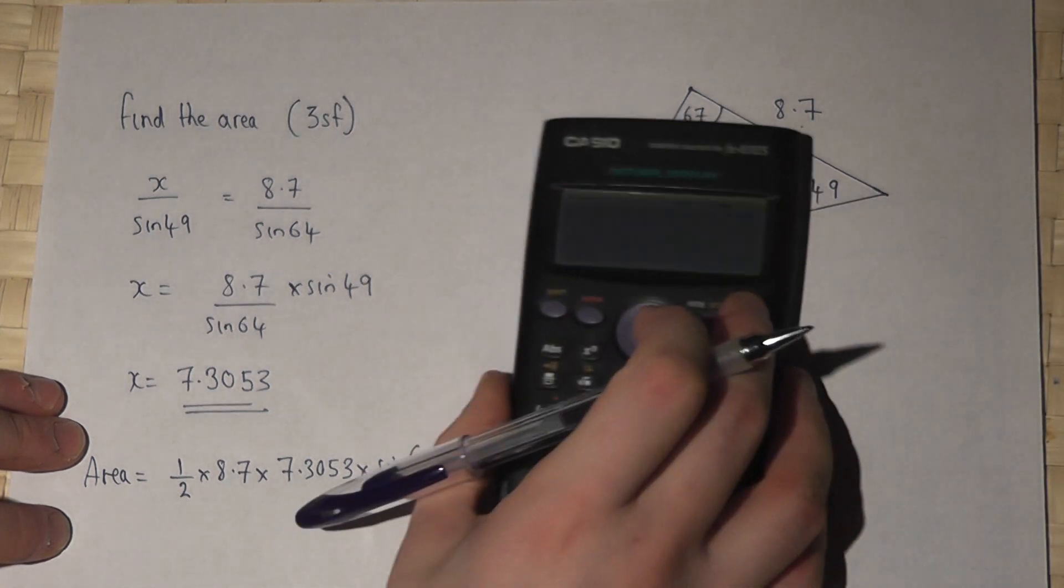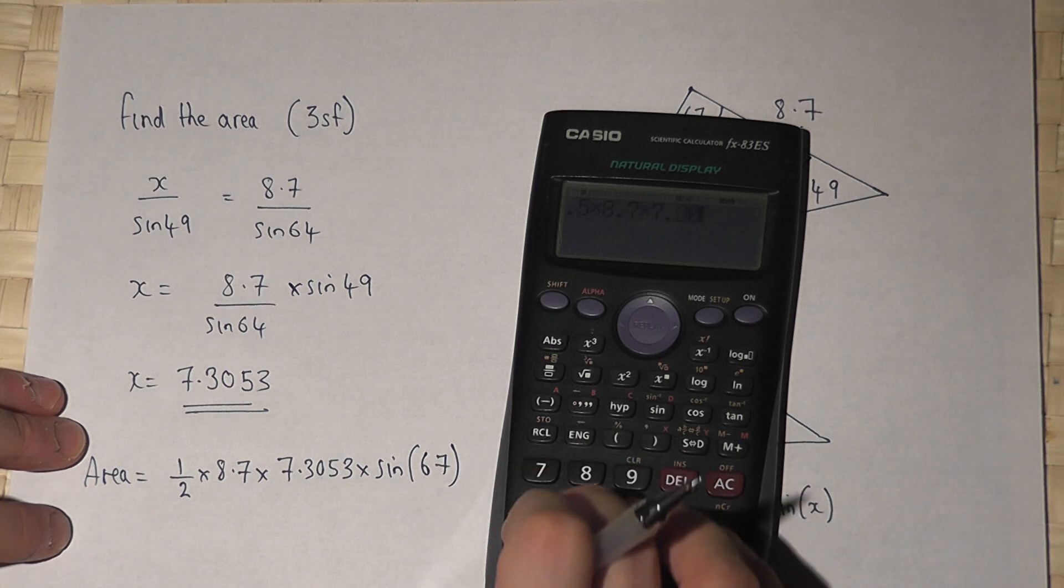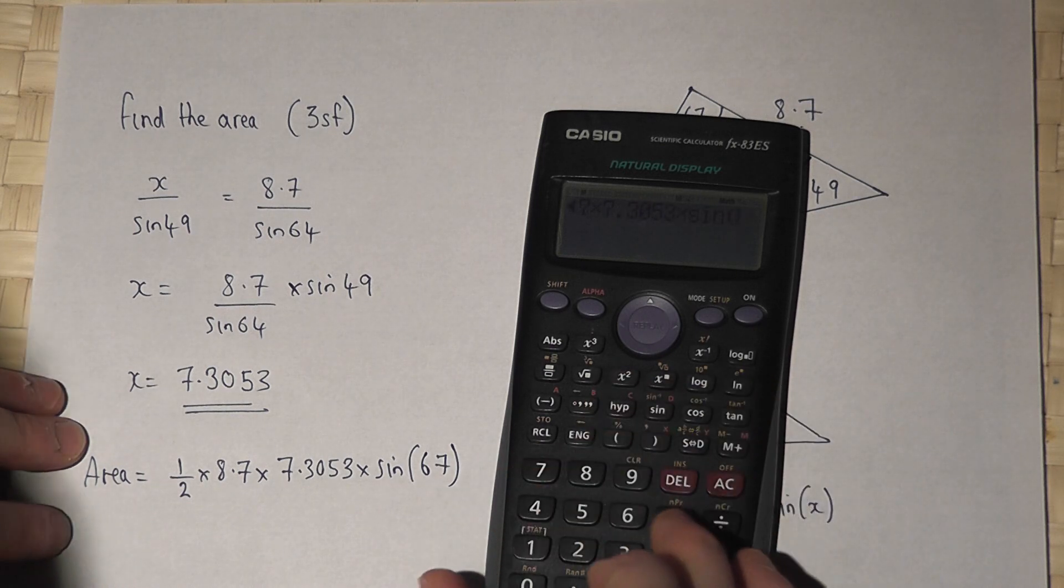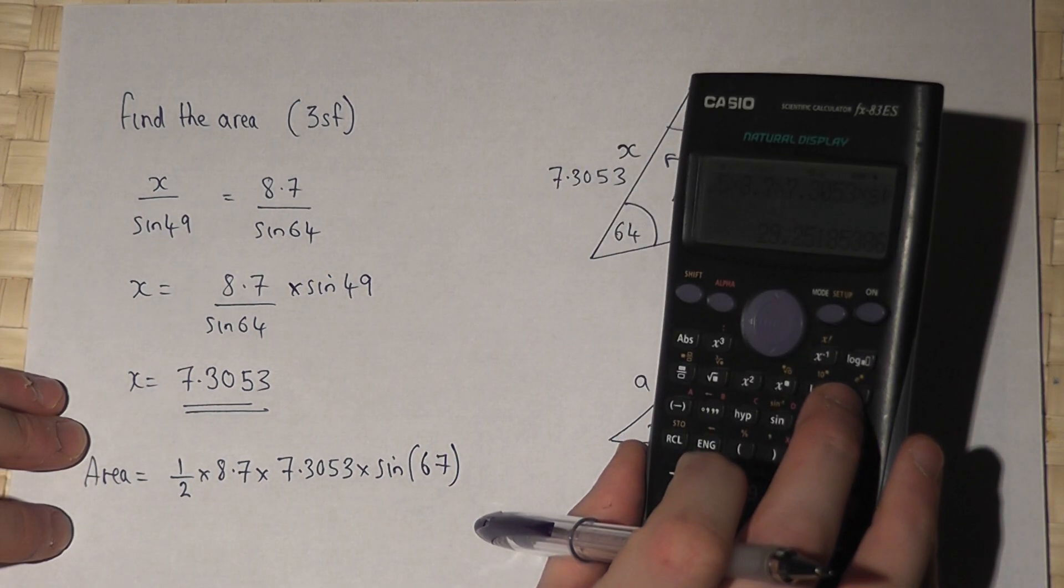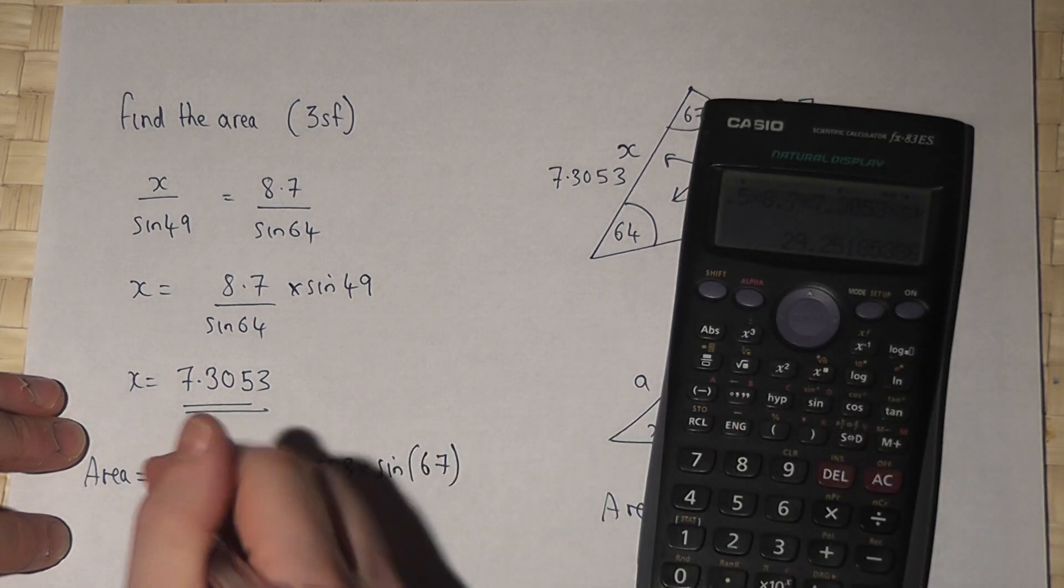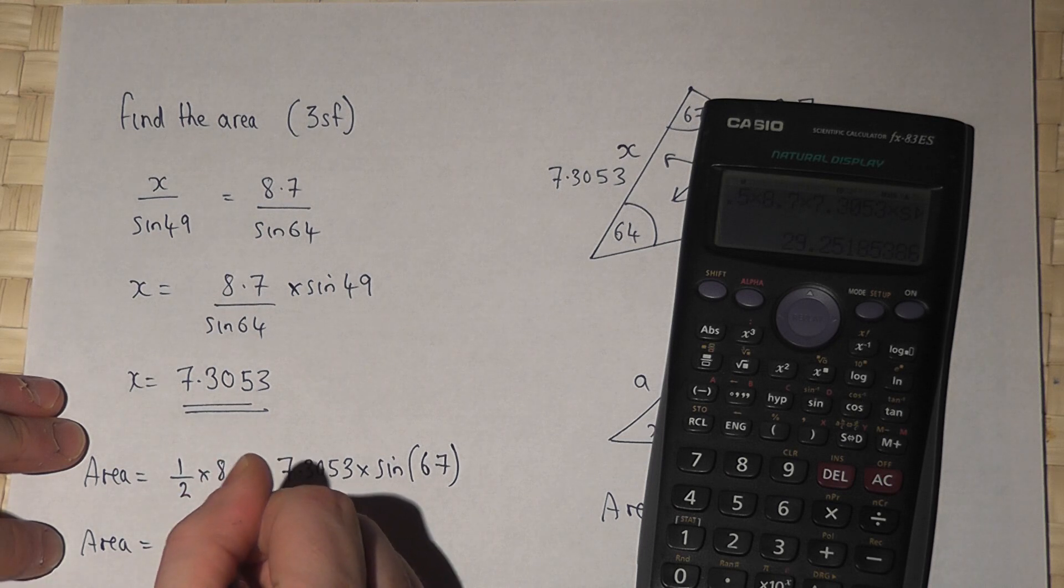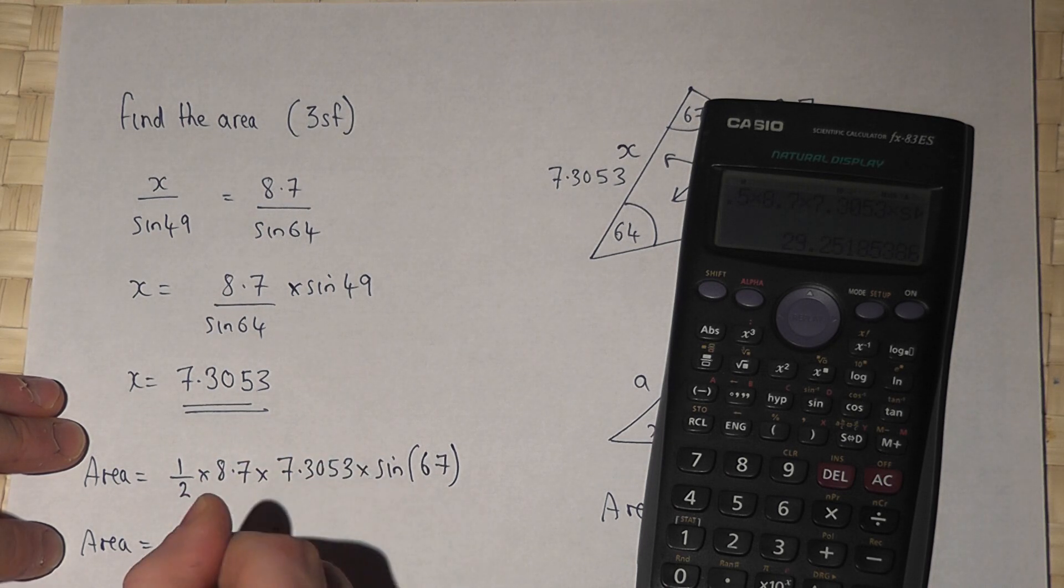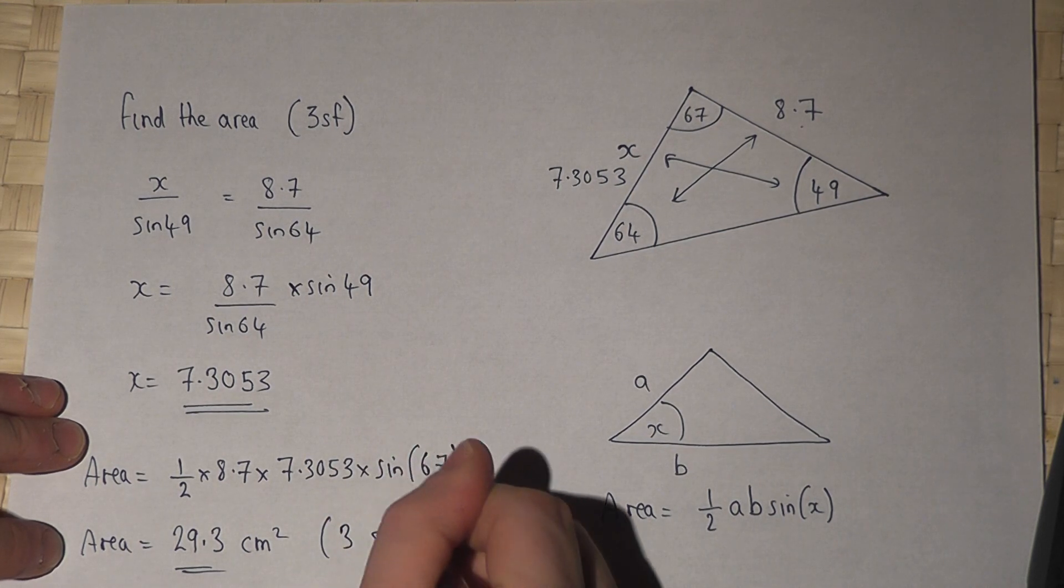So if I've got my calculator, 0.5 times 8.7 times 7.3053 times sine of 67, then my answer is 29.2518. I want it to three significant figures, so the area is 29.3 centimeters squared to three significant figures.